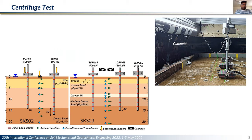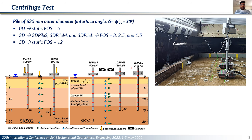We conducted a series of centrifuge tests with different soil profiles and different pile tip embedments. On the left is the SKS02 centrifuge test, which had two piles with the same head load but embedded with different tip embedments in dense sand. On the right is the SKS03 centrifuge test with interbedded soil deposits, with three piles having the same embedment but loaded with different head loads. All piles were 635 mm outer diameter piles with an interface angle of 30 degrees. Embedment varied from 0D to 5D and the load on the pile resulted in a static factor of safety ranging from 1.5 to 12.